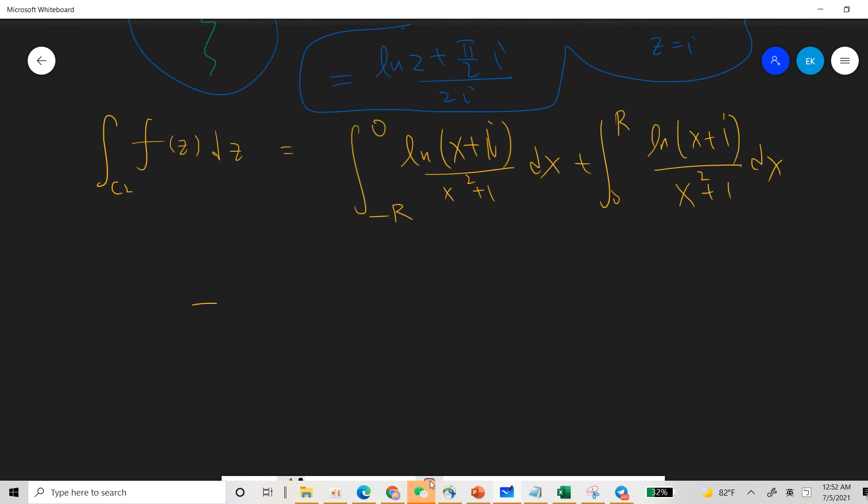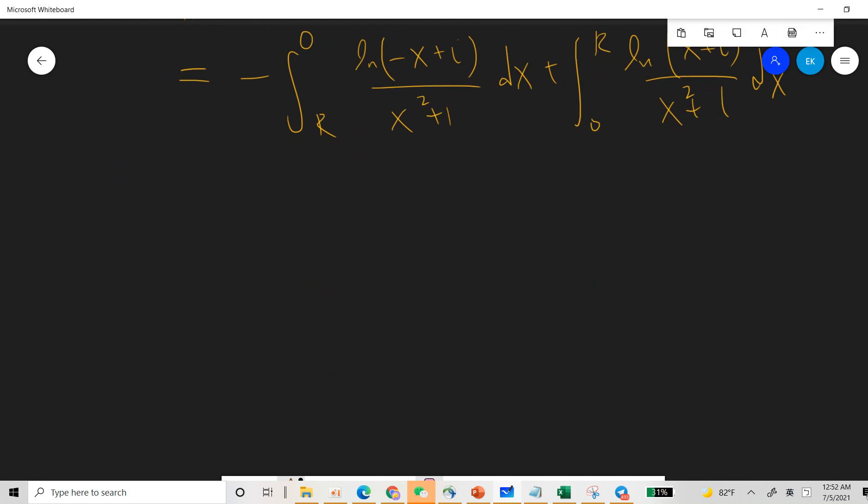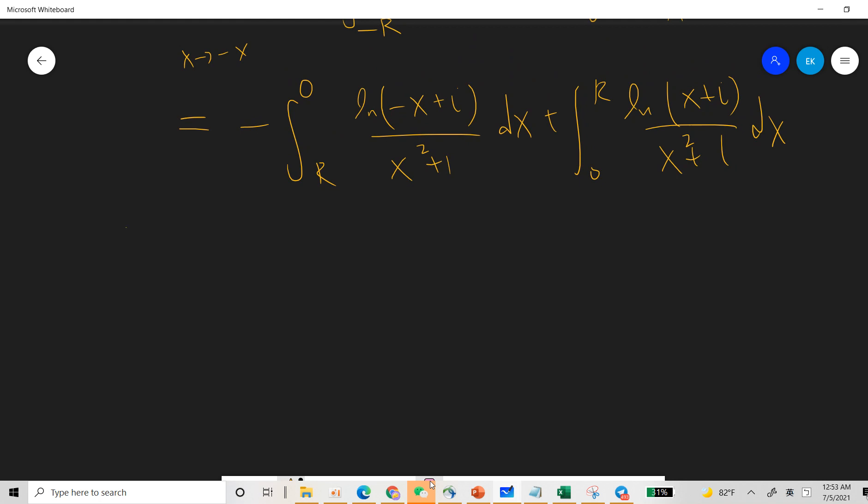So let's do the change of variable. Let's pick, change x to minus x. So there's a minus here, and the log minus x plus i, and x squared still invariant dx, plus 0 to r, log x plus i over x squared plus 1 dx. So now we can try to combine them. So now here's a little bit of problem. So our log minus x plus i is the same as log minus 1 plus log x minus i. So this is the famous i pi. So we can combine these two.